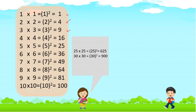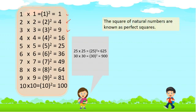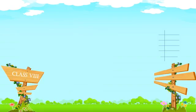One thing we need to know is that the squares of natural numbers are known as perfect squares.